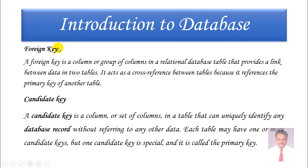The next key is a foreign key. A foreign key is a column or a group of columns in a relational database table that provides a link between data in two tables. The foreign key refers to the primary key located in another table. By using this relationship, we can retrieve information efficiently.